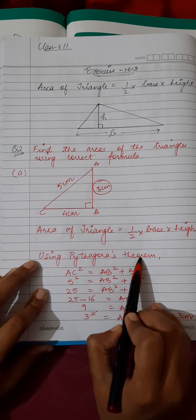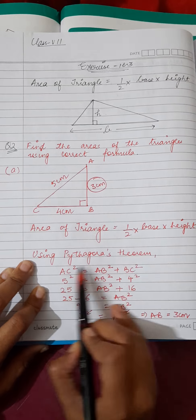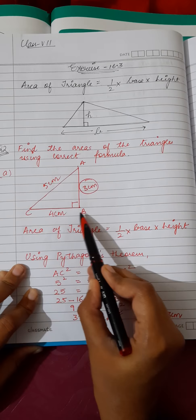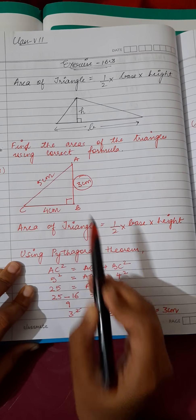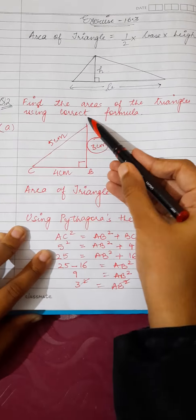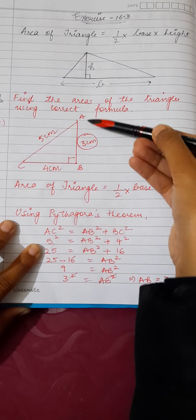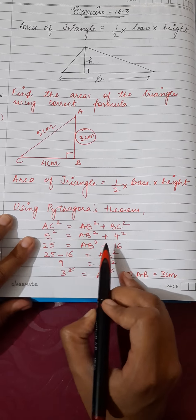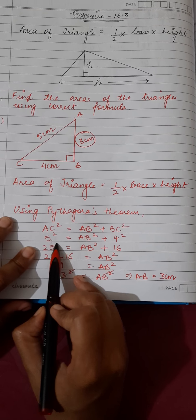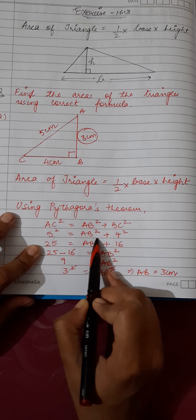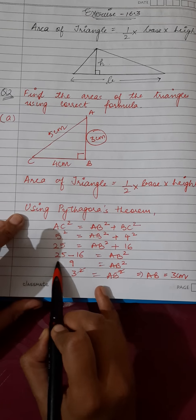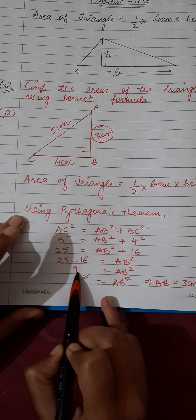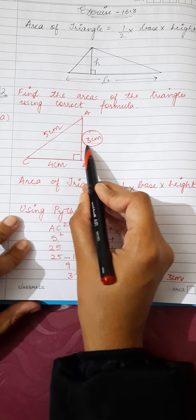Applying the Pythagorean theorem: hypotenuse² = perpendicular² + base². The hypotenuse is 5, so 5² = AB² + 4². That gives us 25 = AB² + 16, so AB² = 25 − 16 = 9, which is 3². Therefore AB = 3 centimeters.